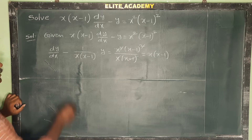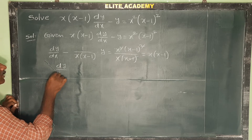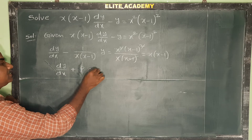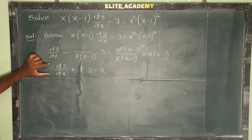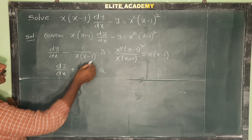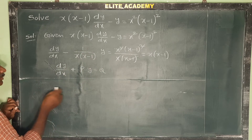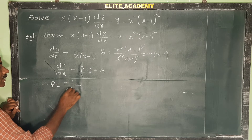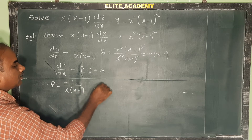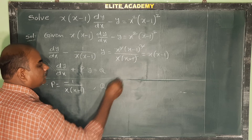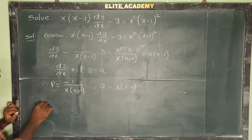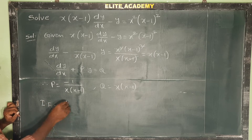Now compare with the general form of a linear differential equation in terms of y: dy/dx plus P·y equals Q. The coefficient of y gives P equals minus 1 by x(x-1), and the right-hand side gives Q equals x(x-1). Now find the integrating factor.